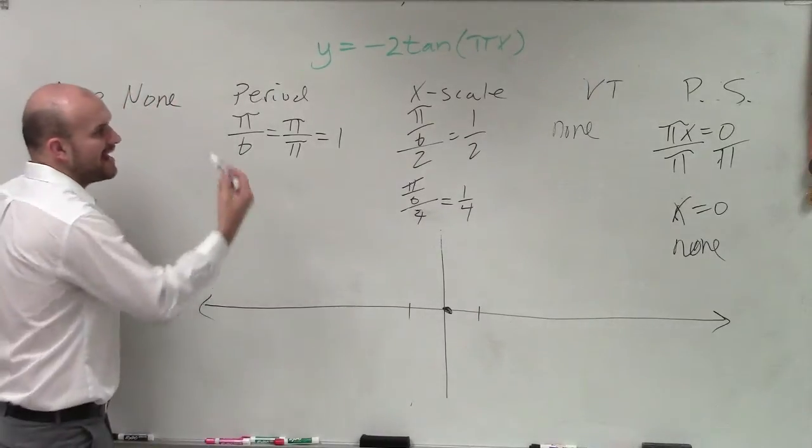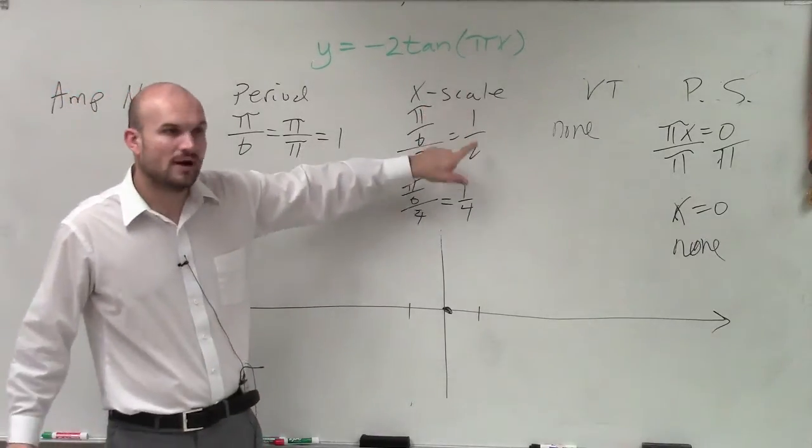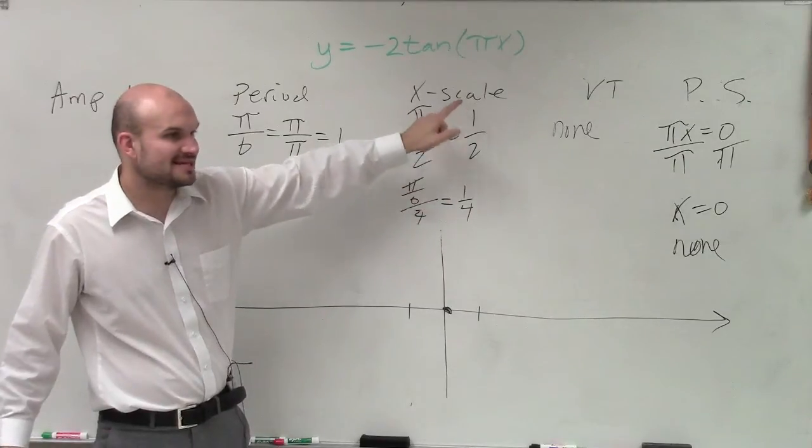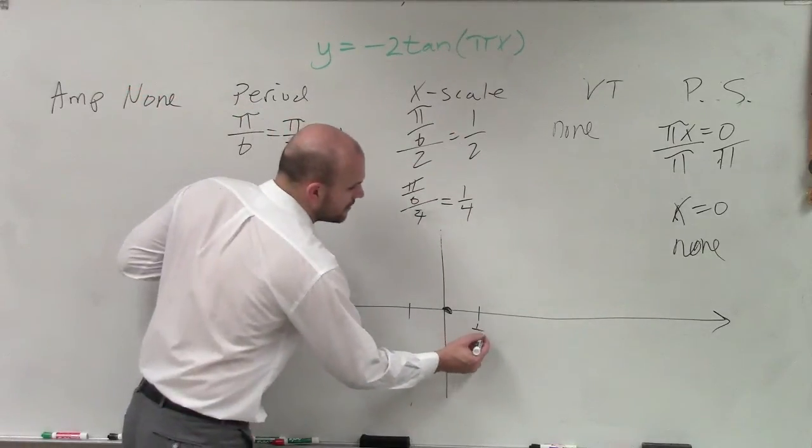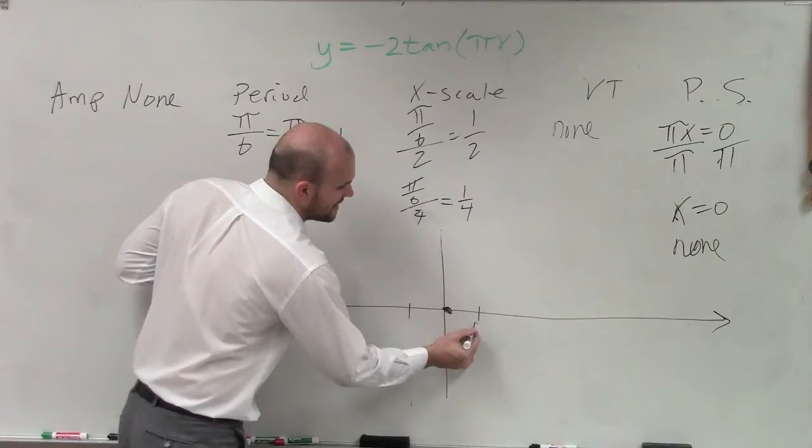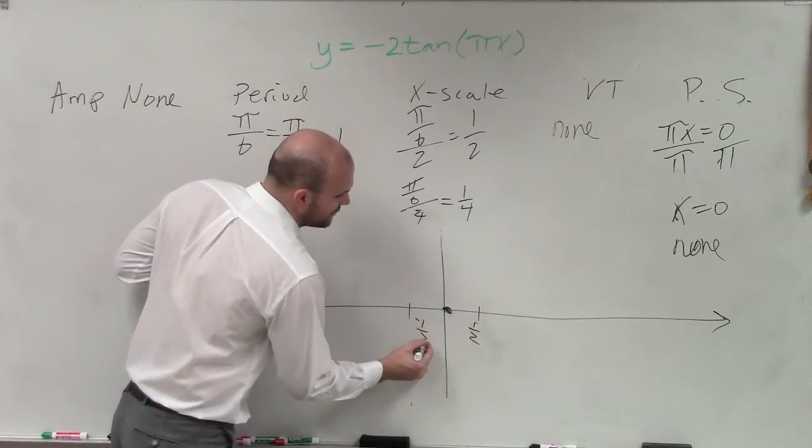So what is my x scale? 1 half. I'll talk about this x scale in a second. My next x scale is 1 half. So therefore, that's 1 half is where my next asymptote is. And that's negative 1 half.